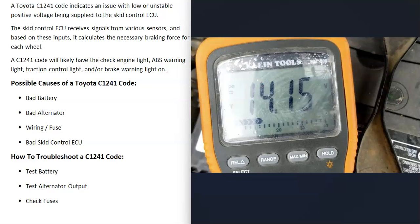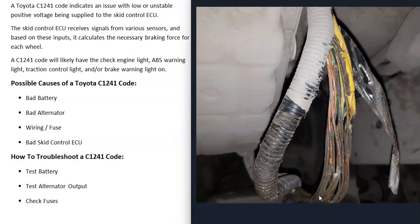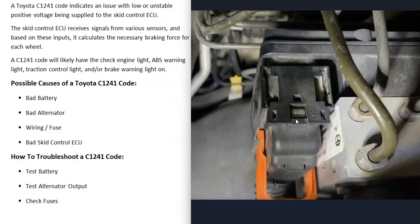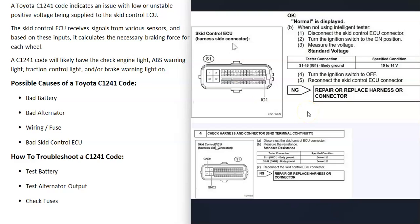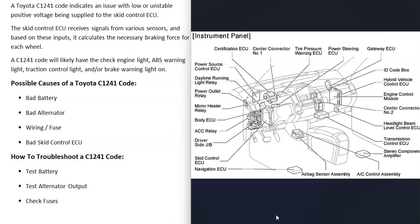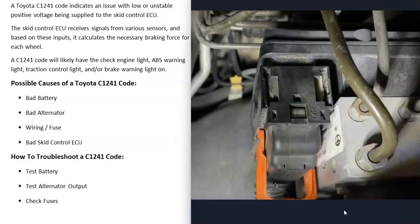If the battery and alternator both look good, then there very likely is going to be some kind of problem in the wiring or a bad fuse. There will be wiring connectors and a harness going to the skid control ECU — you can check that those are all plugged in properly. There are also tests that can be done on the wiring to check for voltages. It's going to vary depending on the Toyota, so you'll need to get a wiring diagram for your specific vehicle to know where the skid control ECU is located.